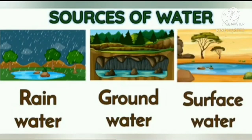Moving on to the sources of water. We know that about 75% of the total earth's surface is covered with water, but only a small percentage — about 2–3% — is suitable for human use. The other 97–98% is found in oceans, seas, rivers, ponds, glaciers, etc. The main sources of water we get are rainwater, groundwater, and surface water.